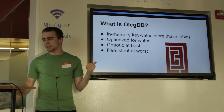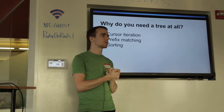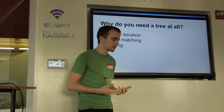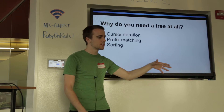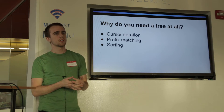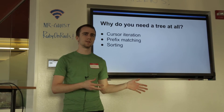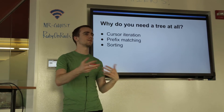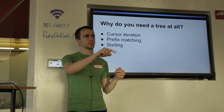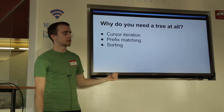Our specific use case was we wanted something where we could iterate through the key-value pairs we have in the database. Oleg is a hash table, which is great if you want to put stuff in and get stuff back out. But you often want to do more, and if you can do that in the database, you do a thing called cursor iteration where you have a cursor and you jump through your key-value pairs and pull them out. This is a pretty common paradigm.